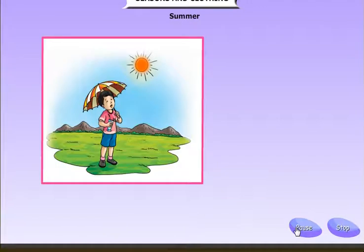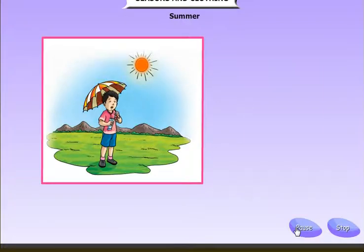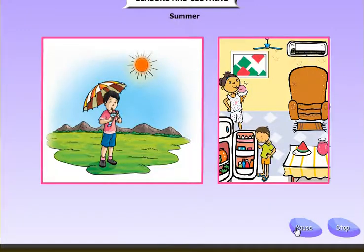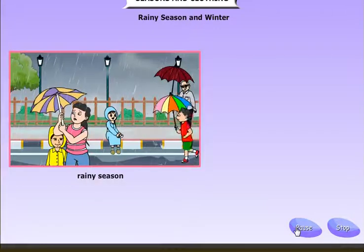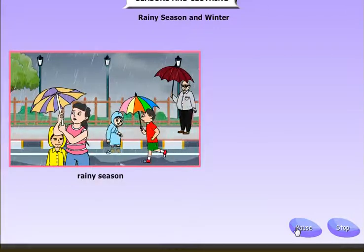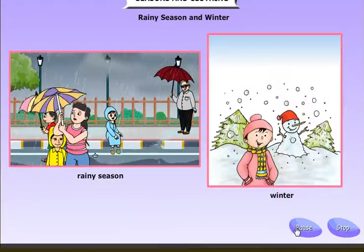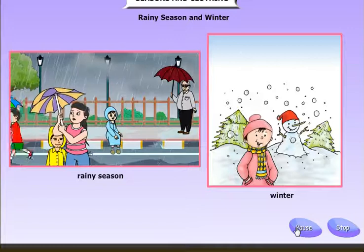Summer is the season when it is very hot. We feel thirsty during this season. Children enjoy cold drinks and ice cream. Most schools close for summer vacation during peak summer months. Rainy season is also called the monsoon - during monsoon it rains heavily. Winter is a season when it is very cold.